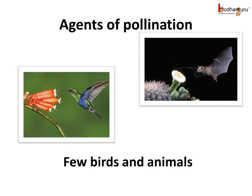Even a few small birds like the sunbird or the hummingbird, which have smaller beaks, pollinate the flowers. A few bats and rodents also pollinate the flowers.